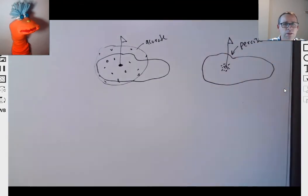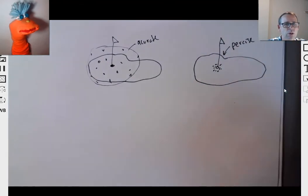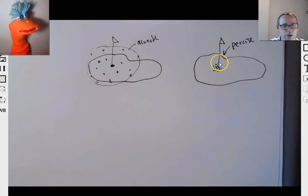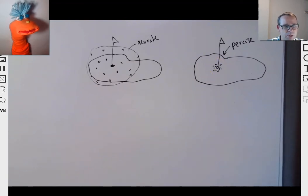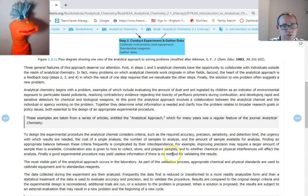When your distribution is clustered tightly around the correct value, that is precision — precise. So not just accurate, but precision accuracy is nice, but precision is also necessary.